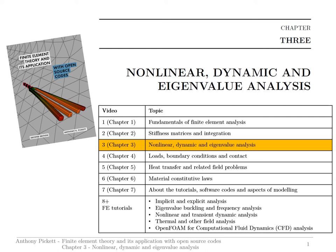So far in these videos I've been considering only implicit linear analysis. Linear means that the geometric behavior and the material behavior are both linear. In this video I'm going to move on. It covers chapter 3 of the book and deals with different types of nonlinear analysis, either implicit or dynamic, where the material behavior or the geometry behavior has a nonlinear relationship. I also cover some dynamic methods such as explicit methods, and a last section looks into eigenvalue analysis, which is a very useful tool in finite element codes.